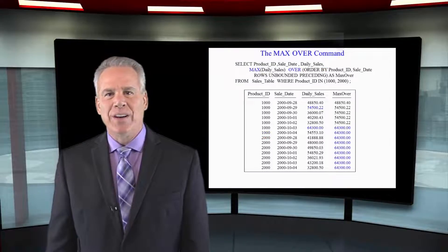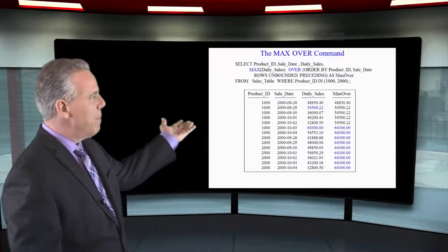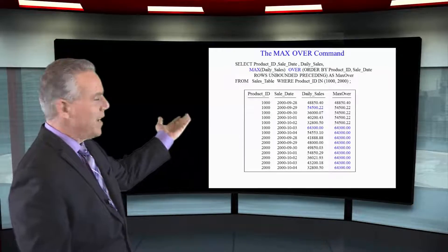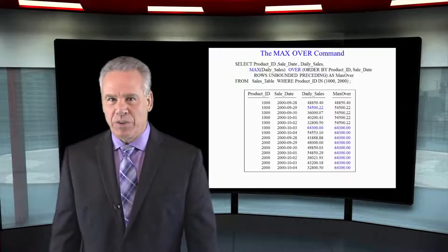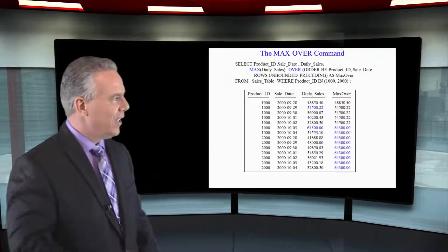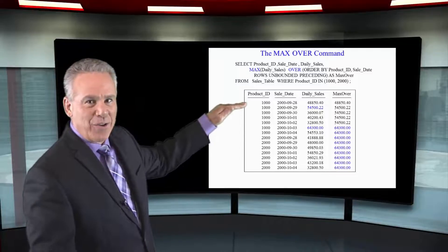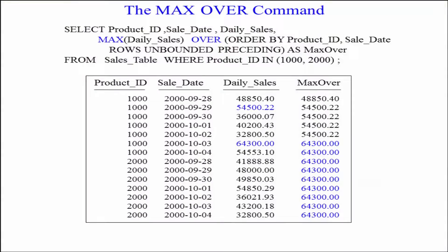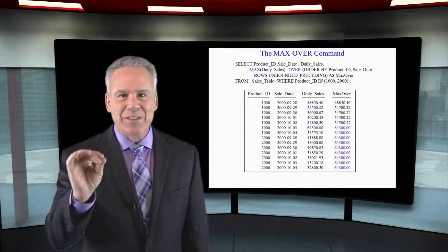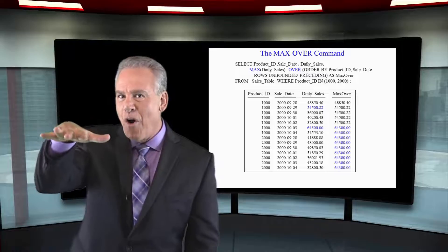This query will take a look at the MAX of daily sales OVER. When it orders by product ID, sale date, ROWS UNBOUNDED PRECEDING, it does the sort first, and then it begins to list the max value. As the next daily sales comes up, if it's not over that max, it just continues there. When it resets, that's a higher max. It will continue to bring you the max value thus far.